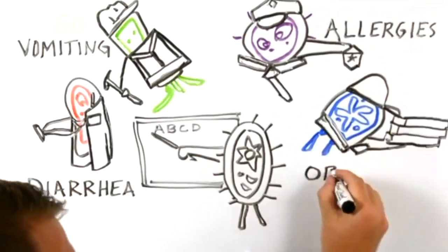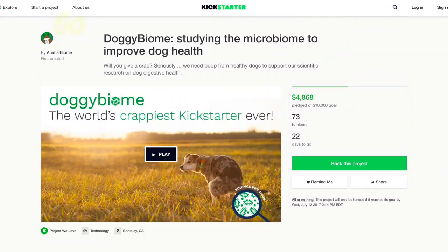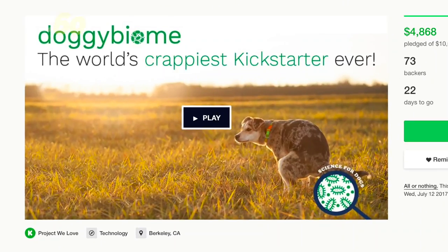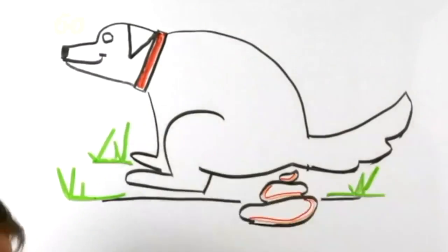Think allergies, obesity, vomiting and diarrhea. Speaking of, they call Doggy Biome the world's crappiest Kickstarter ever. That's because they want your dog's doo-doo.